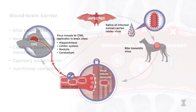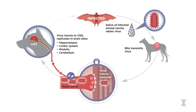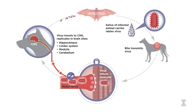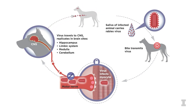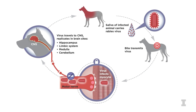Therefore, rabies infection within the brain is not contained, so it continues to migrate, making its way via the parasympathetic nervous system to multiple locations outside of the CNS, a process known as centrifugal spread.